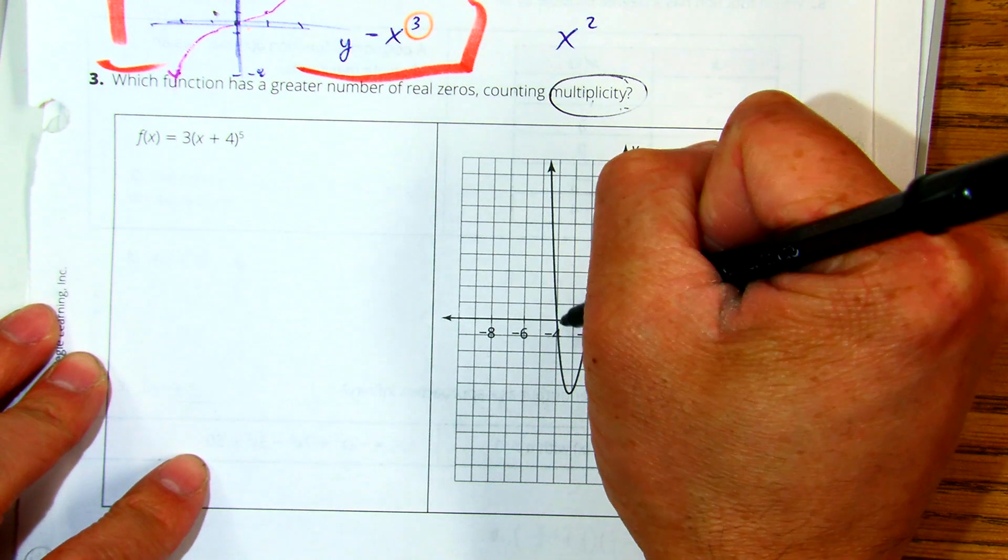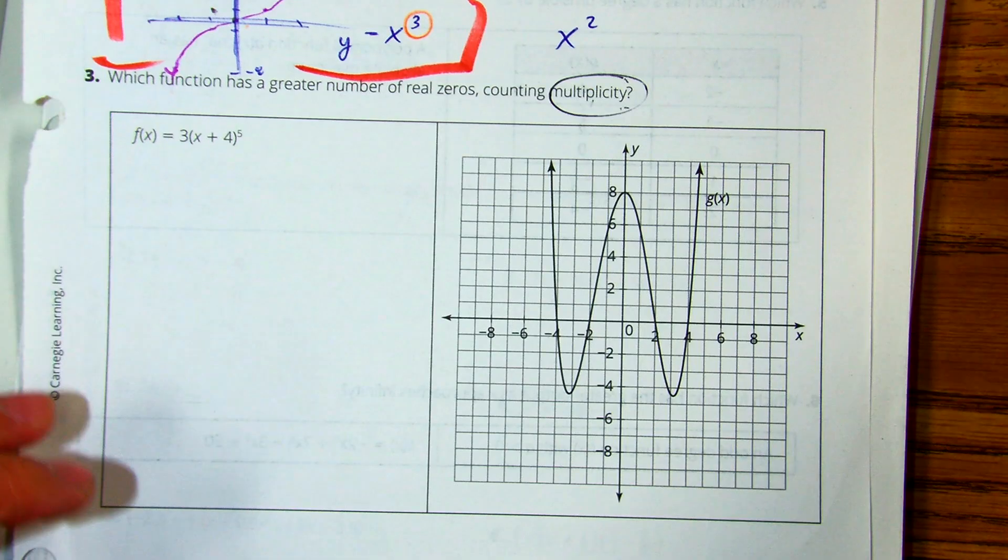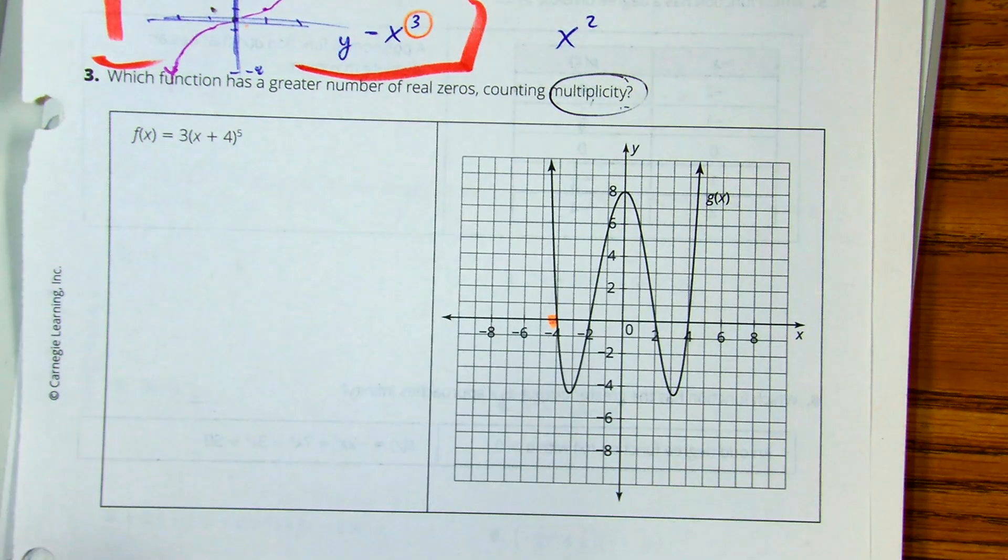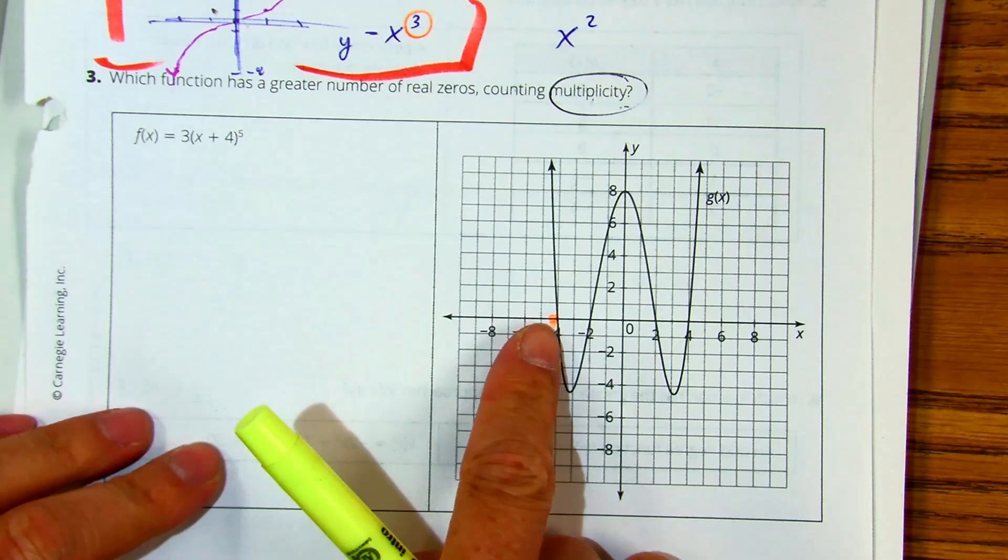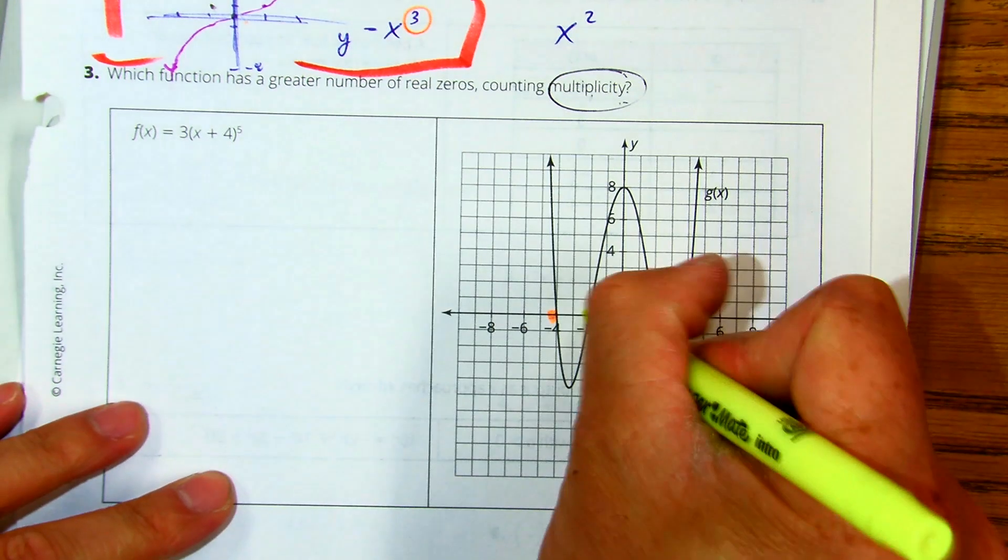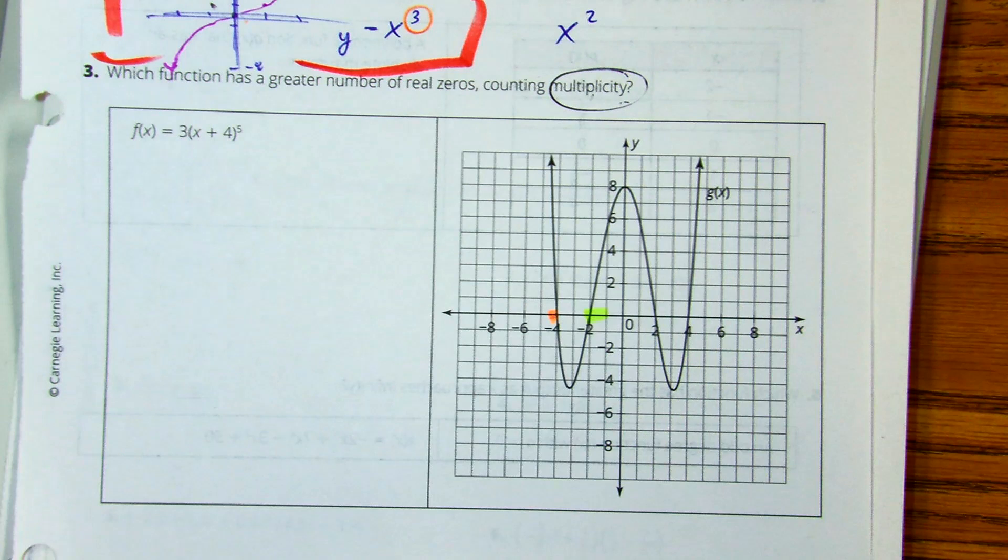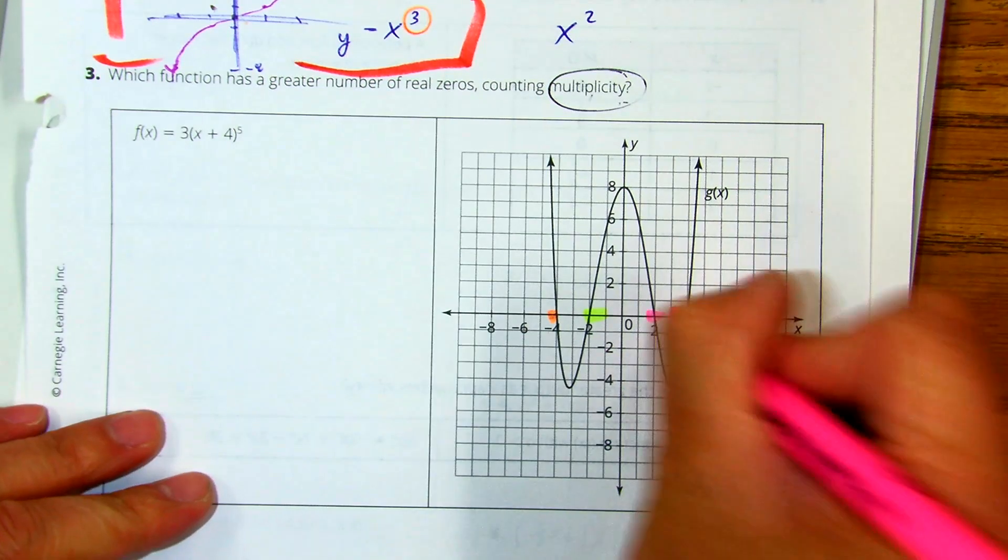I'm going through here and I have four distinct zeros. Distinct zeros means like x equals negative four, x equals negative two, x equals two, and x equals four.